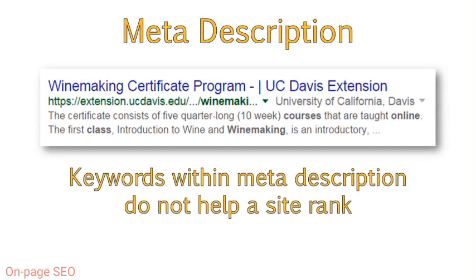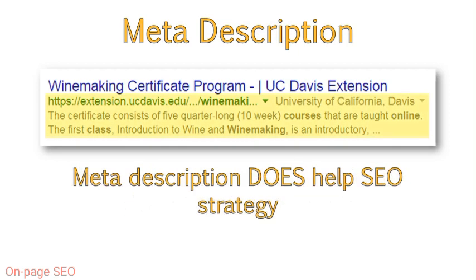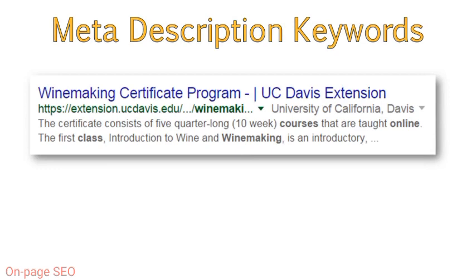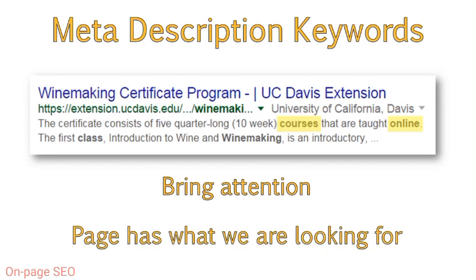Unlike the title tag, keywords within the meta description will not help a site rank better for those keywords. Due to this, some people are under the misconception that optimizing this area is not helpful to their SEO strategy. However, while search engines will not look for keywords within the meta description for ranking purposes, the meta description does help support your SEO strategy. A well-crafted meta description has been found to increase click-through to your website — it influences how likely a user is to click on your result instead of a competitor's. Do you recall how the keywords we used were bolded within the meta description? This helps to draw the eye to that particular result and lets us know that the page contains exactly what we're looking for.